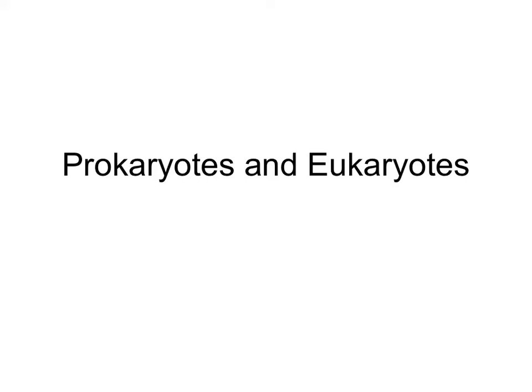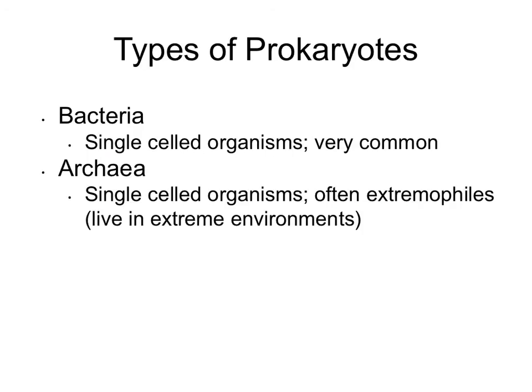In this lecture, we're going to talk about two different cell types: prokaryotes and eukaryotes. We will start with prokaryotes. The word prokaryote means 'first cell' or 'without a nucleus,' and there are a couple types of cells in the world that do not have a nucleus.